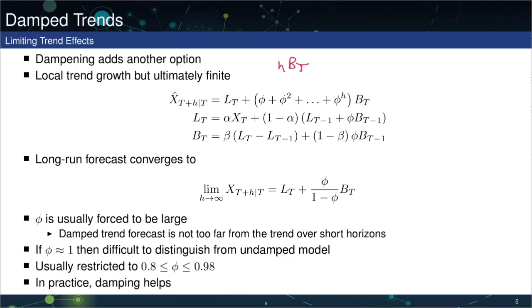Damping reduces the growth of the trend. The parameter phi shows up in the H-step equation as (phi + phi² + ... + phi^H) times B_T. If phi is 1, we immediately get back the previous undamped model. We need phi to be less than 1 for damping to be interesting. We've seen sequences like this before — they are convergent as long as phi is less than 1 in absolute value.